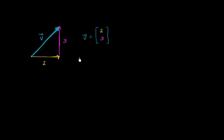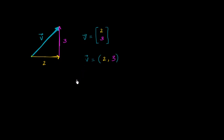We could represent this vector — let's call it vector v — as an ordered list, or a 2-tuple: we move 2 in the horizontal direction and 3 in the vertical direction. So you could represent vector v as (2, 3). And what I now want to introduce you to is another notation, which really comes out of the idea of what it means to add and scale vectors. To do that, we're going to define what we call unit vectors.